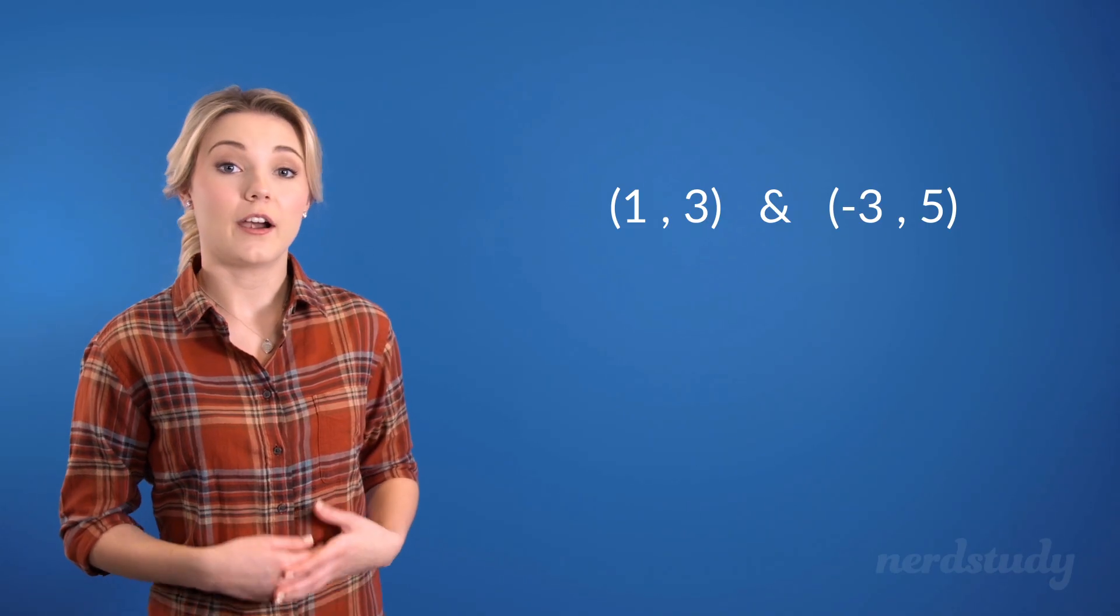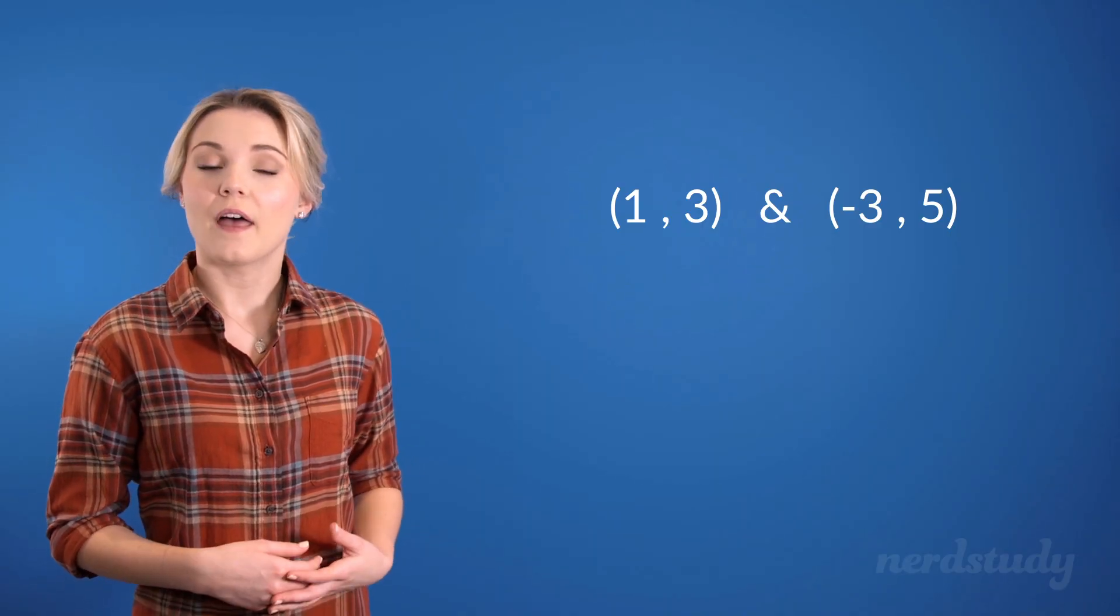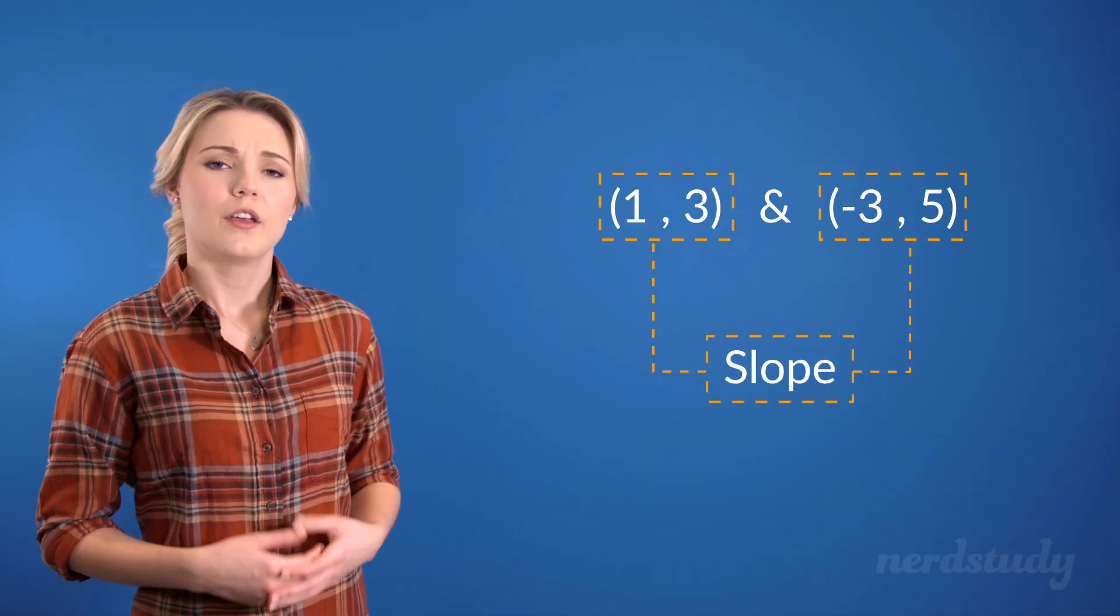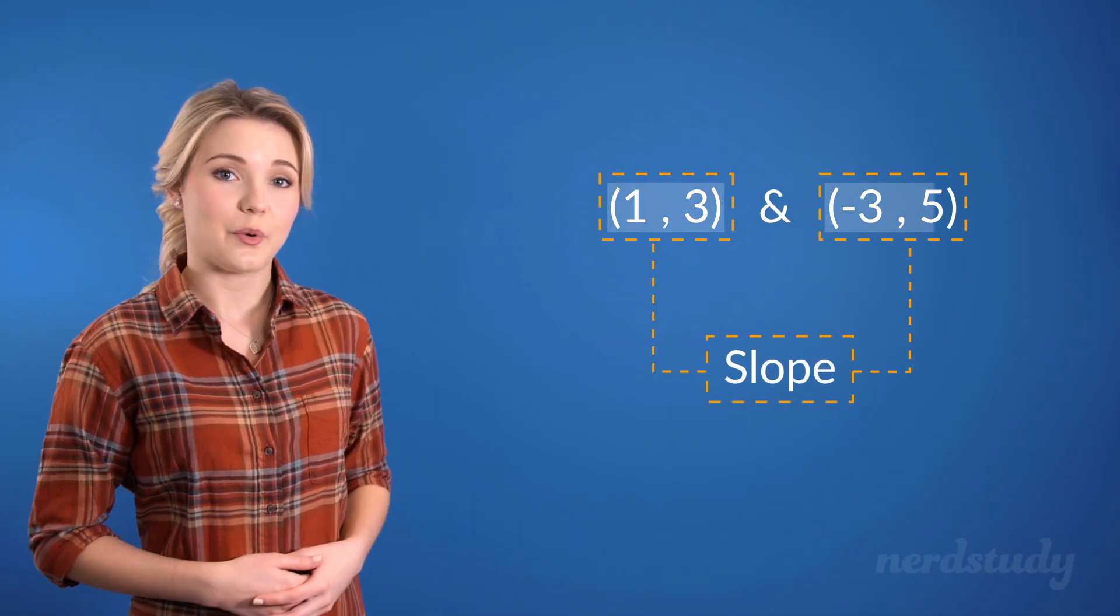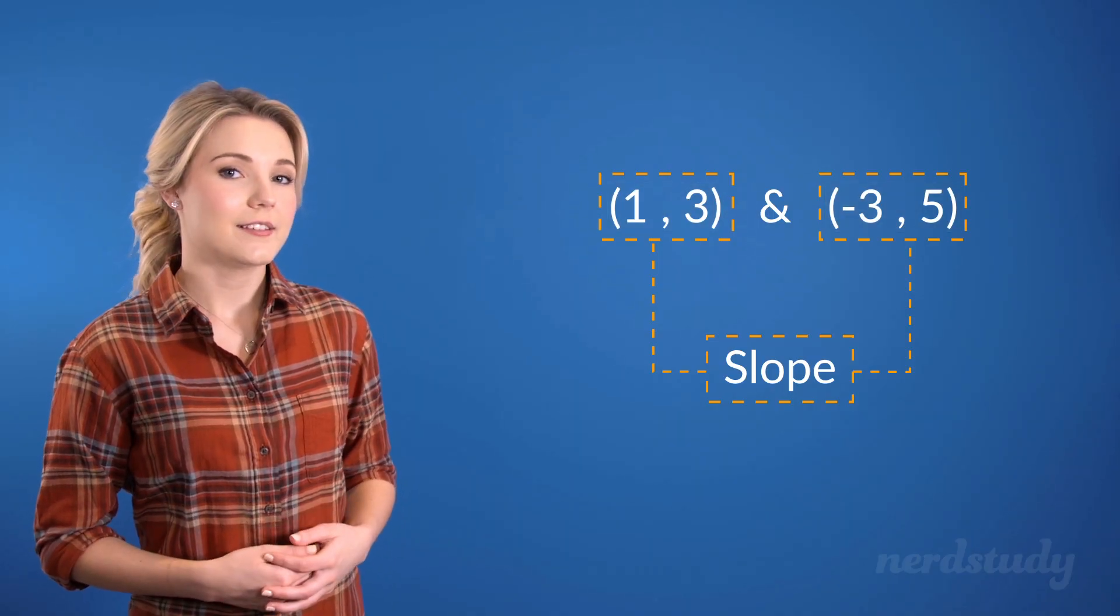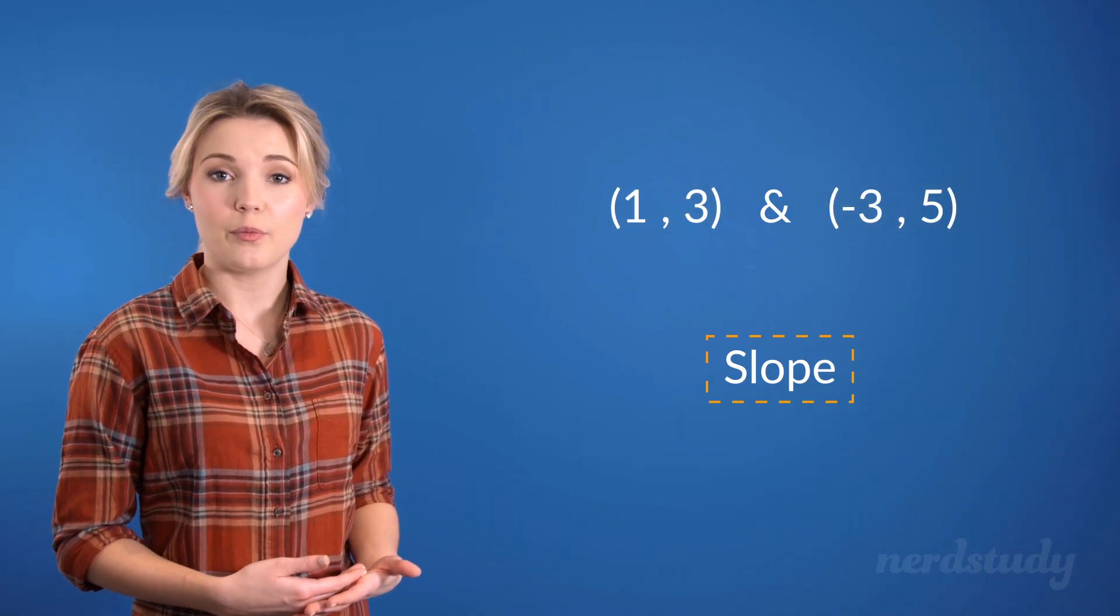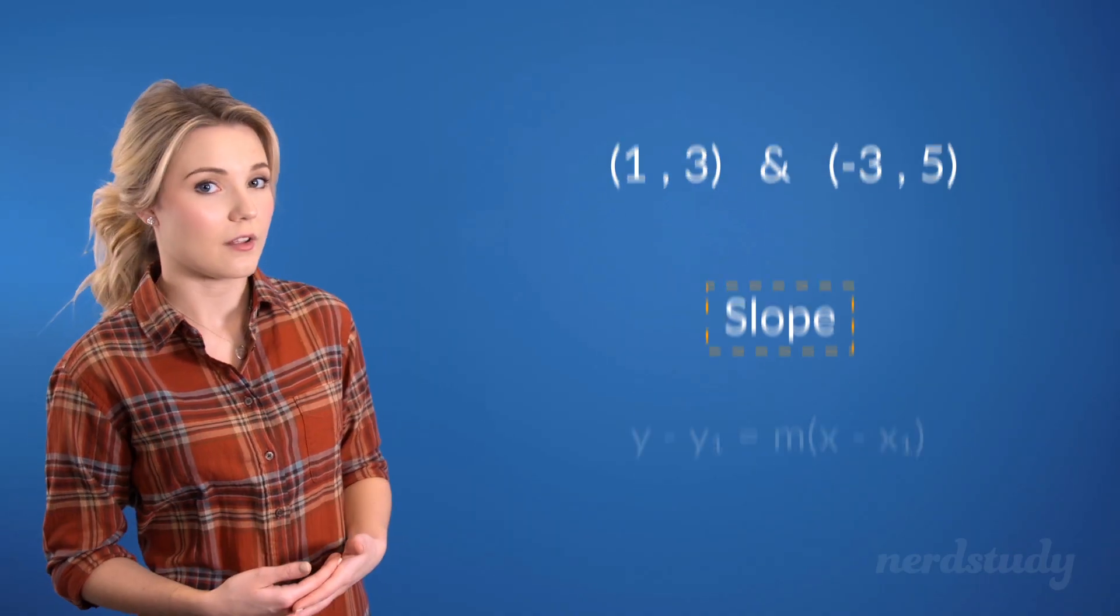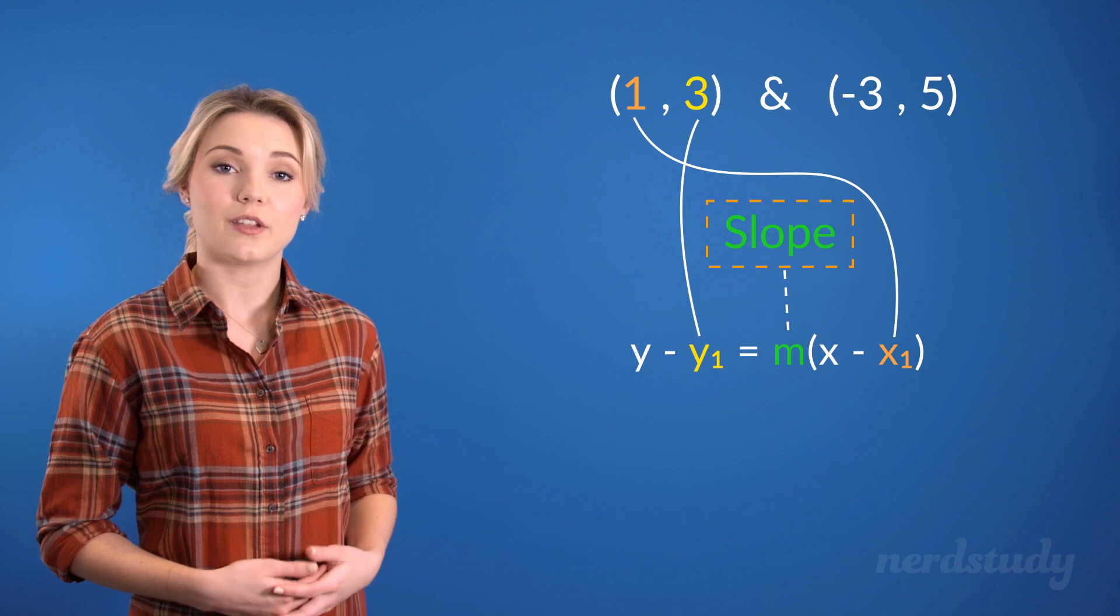We already learned from our Intro to Slopes video that all we need are two points on a line to find the slope. So, why not use these two points to find the line slope? And from there on, since we would already have a slope, we would just need to use any of the two points and the slope to plug into the point-slope form.